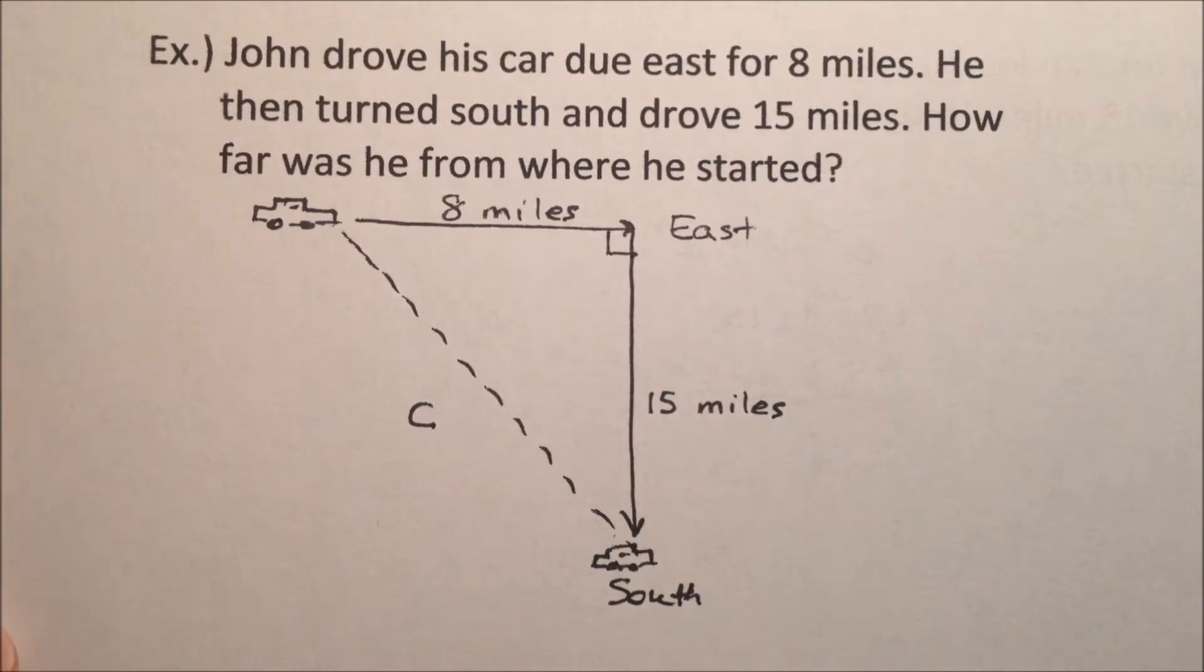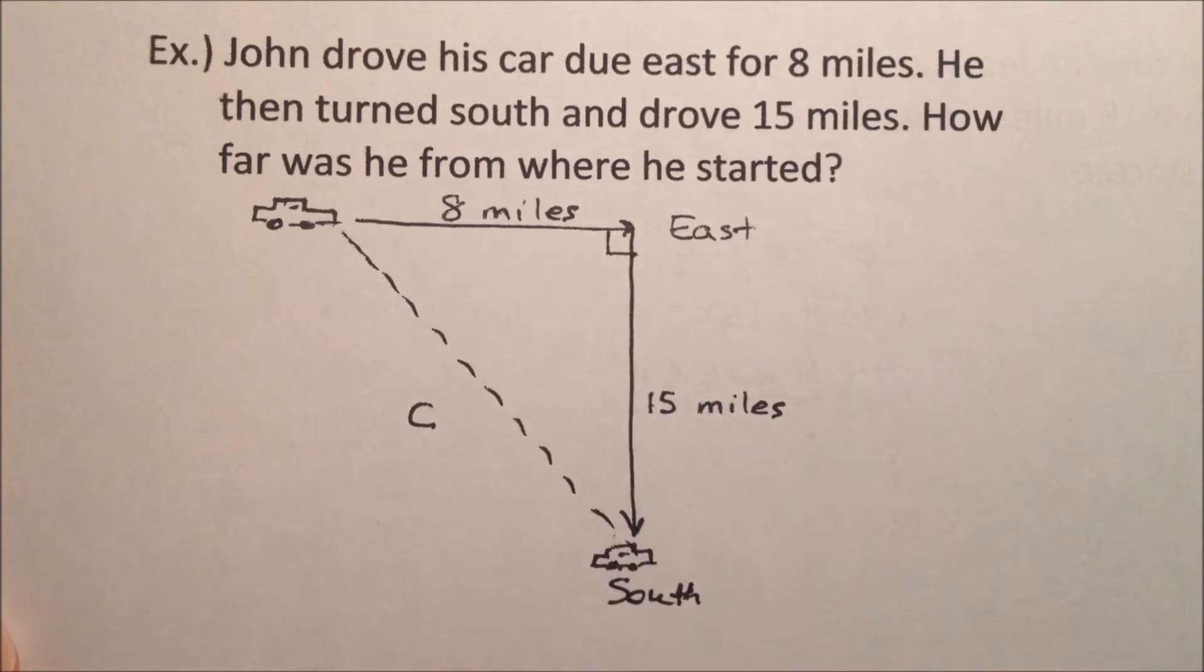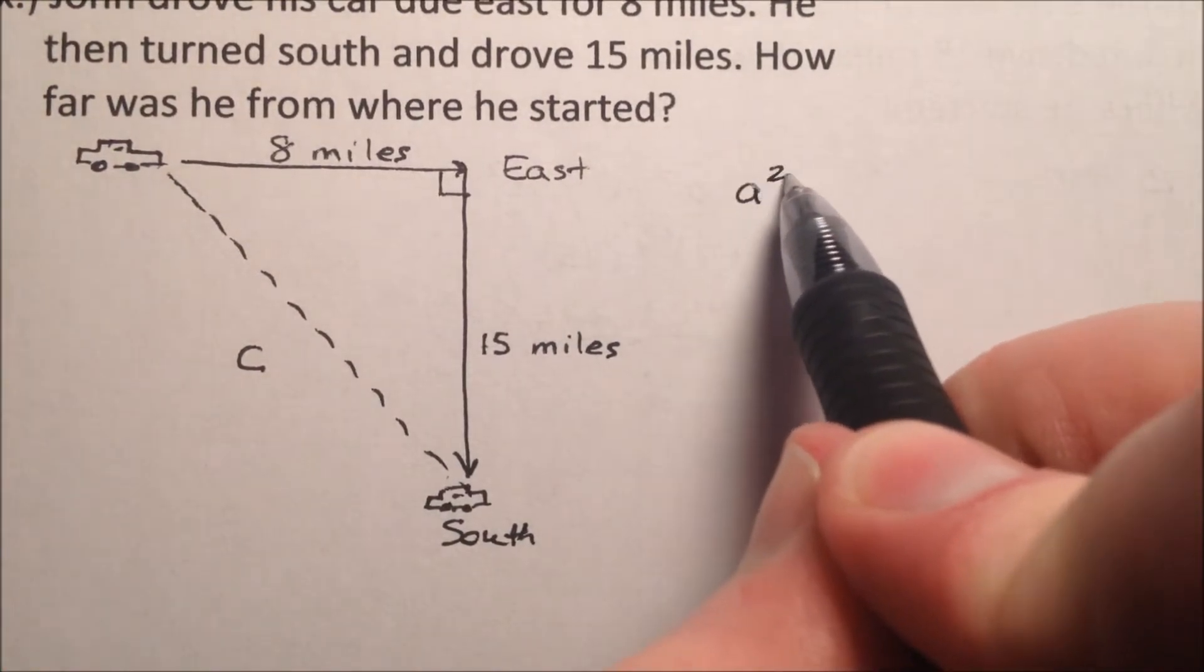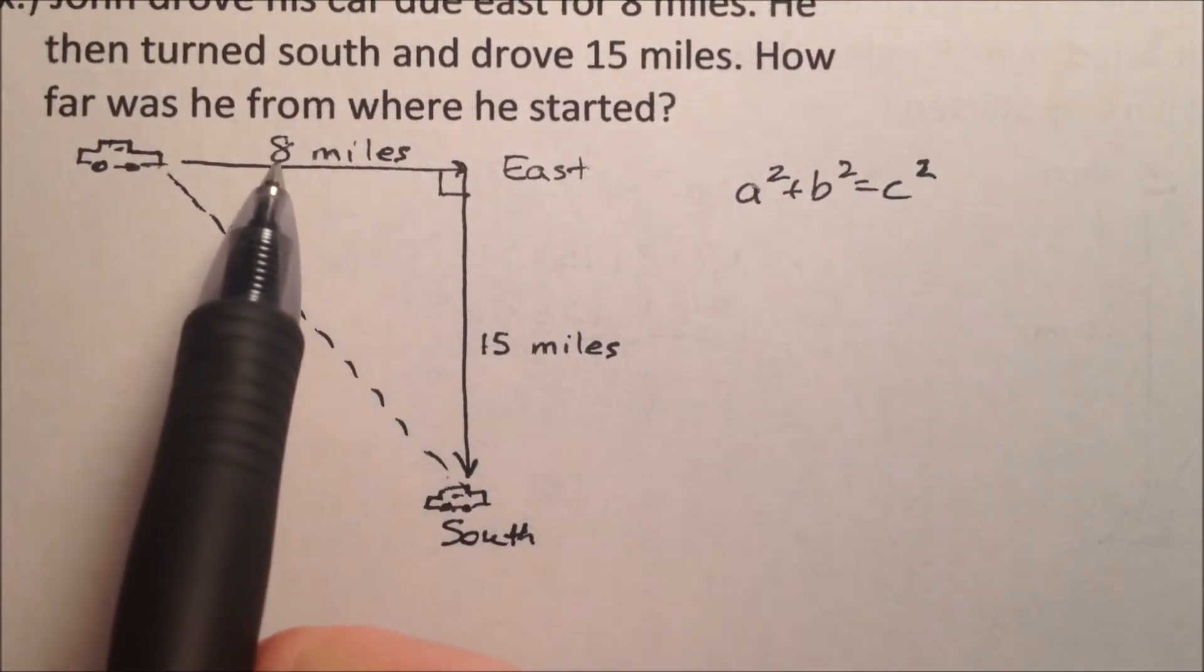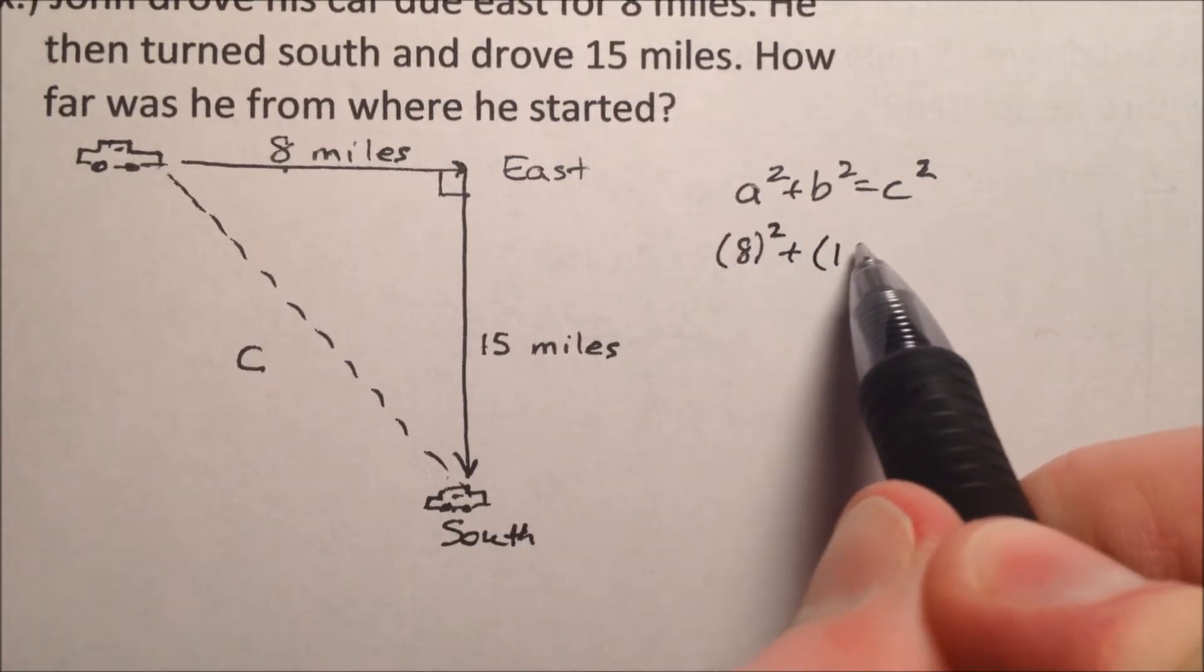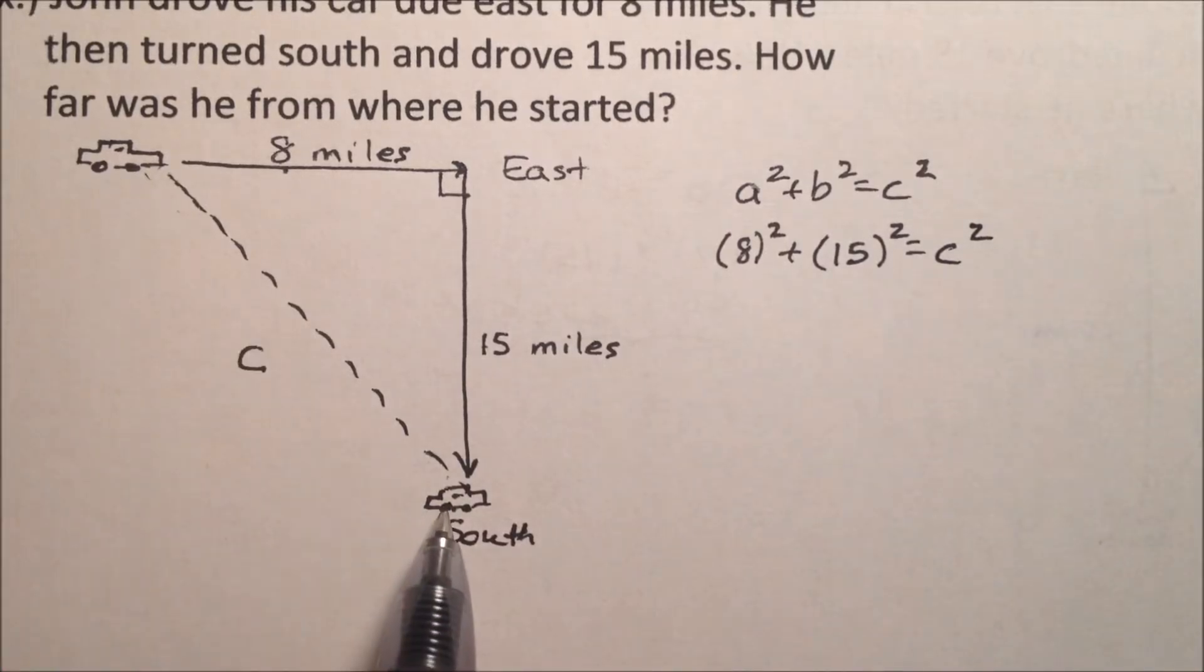So what will the leg lengths be? Well, it looks like we've got eight miles here and 15 miles here. So if we use a² + b² = c², we can plug our values in. So eight will be one of our legs, 15 will be the other leg, and c² is this distance that we're looking for.